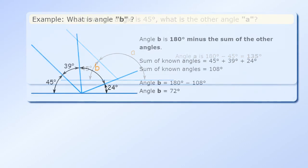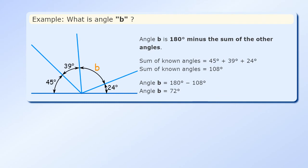This method can be used for several angles on one side of a straight line. Example, what is angle B? Angle B is 180 degrees minus the sum of the other angles.